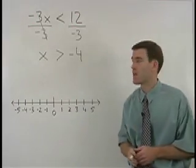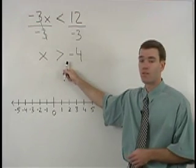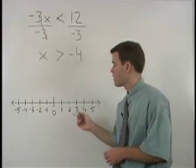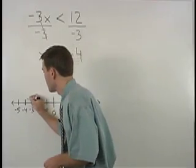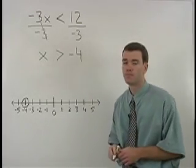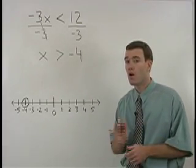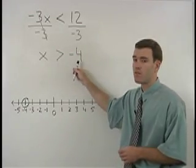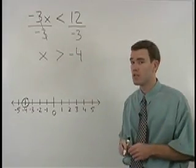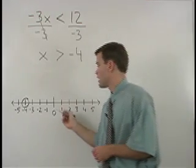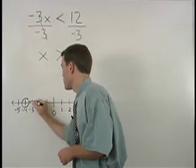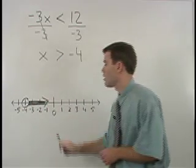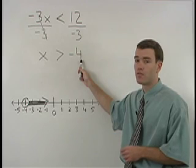Our next task is to graph x is greater than negative 4 on a number line. And to do that, we start with an open dot at negative 4. The reason we use an open dot at negative 4 is that x is greater than negative 4, but it is not equal to negative 4. Next, we draw an arrow going to the right on our number line to represent all numbers greater than negative 4.